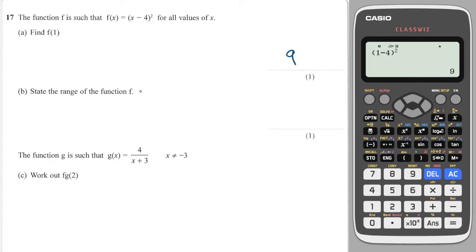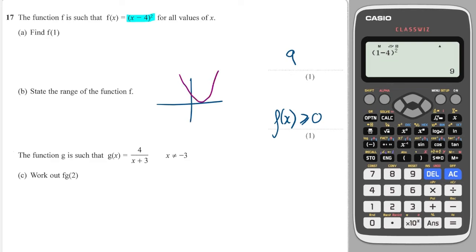State the range of f(x). A bit trickier. Well, this is a perfect square and what do we know about squares? They will never be negative. You can't get a negative number after you square your input. So therefore the range is that f(x) will always be greater than or equal to 0. What you could do is sketch the graph — it would be a quadratic and it will never go below 0.